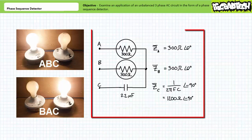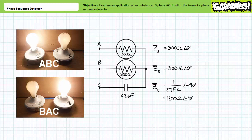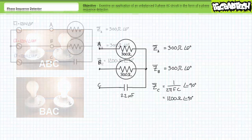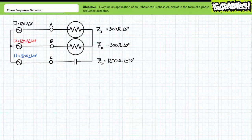A phase sequence detector circuit can be constructed using an unbalanced three-wire Y configuration featuring two identical light bulbs, ZA and ZB, each modeled as having an impedance of 300 ohms at an angle of zero degrees, and a 2.2 microfarad capacitor, ZC, having an impedance of roughly 1.2 kilohms at an angle of negative 90 degrees at an excitation frequency of 60 hertz. If bulb A is brighter, the sequence is ABC. If bulb B is brighter, the sequence is BAC. Let's initially assume the phase sequence detector is hooked up with phase L1 to terminal A, phase L2 to terminal B, and phase L3 to terminal C — our calculations should demonstrate that light bulb A will be brighter.